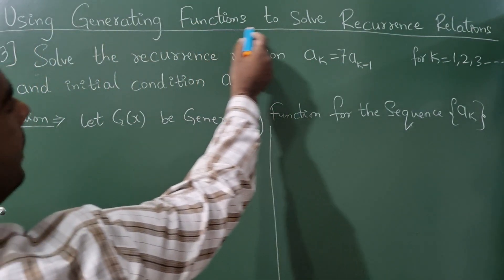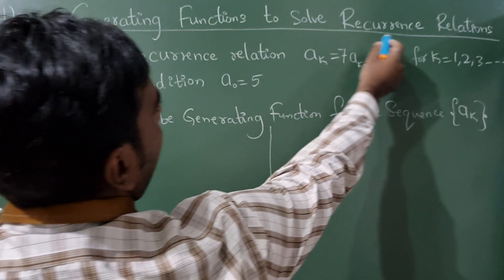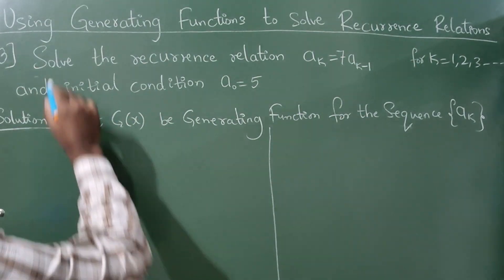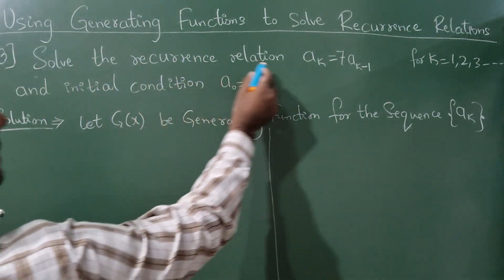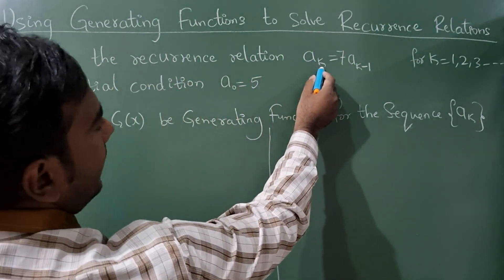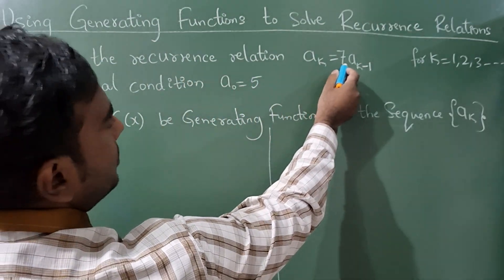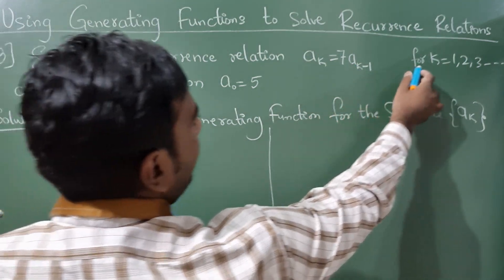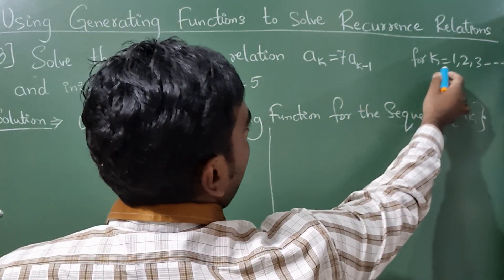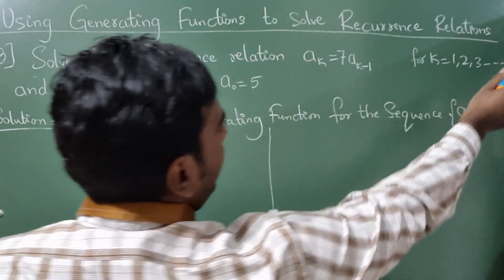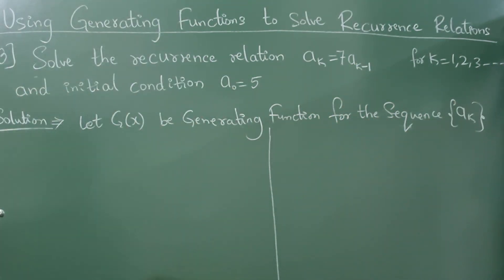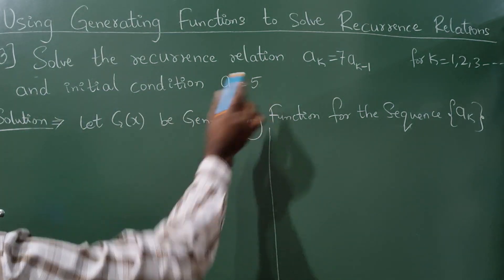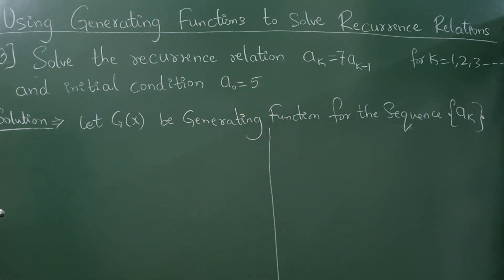Using generating functions to solve the recurrence relation: a_k is equal to 7·a_{k-1} for k = 1, 2, 3, and so on, with initial condition a_0 equal to 5.